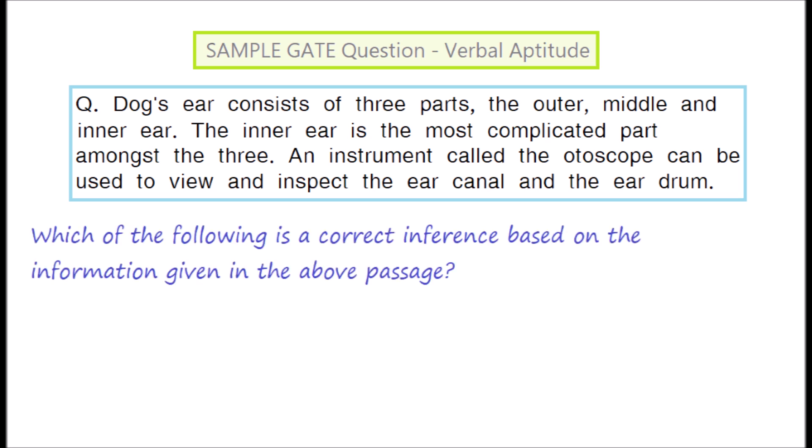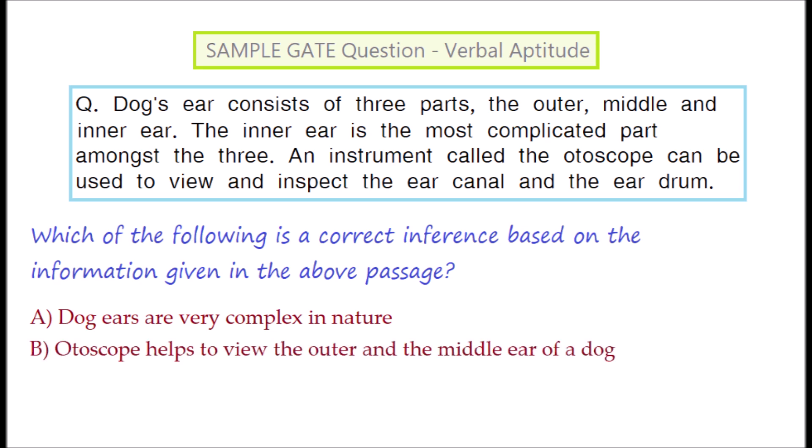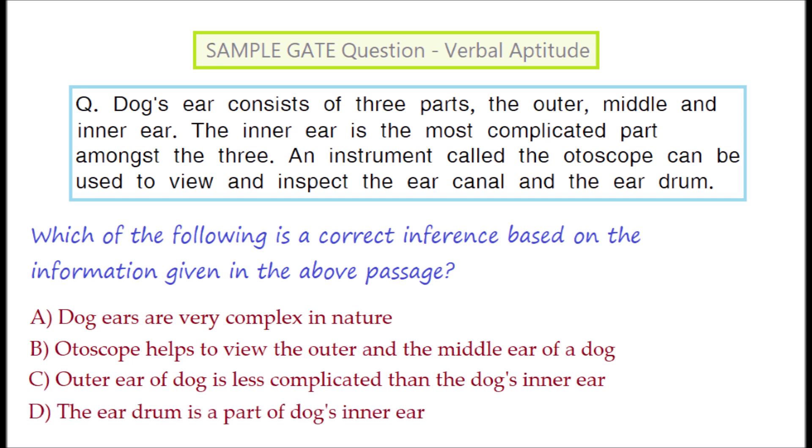Which of the following is a correct inference based on the information given in the above passage? Option A: Dog ears are very complex in nature. Option B: Otoscope helps to view the outer and the middle ear of a dog. Option C: Outer ear of dog is less complicated than the dog's inner ear. Option D: The eardrum is a part of dog's inner ear.